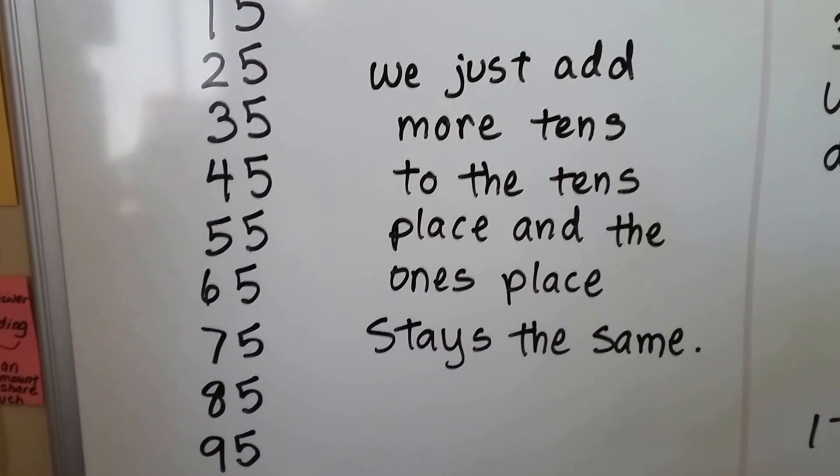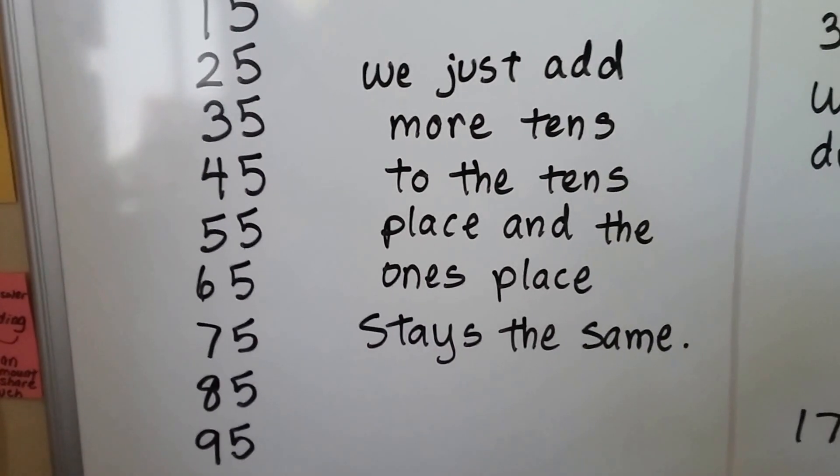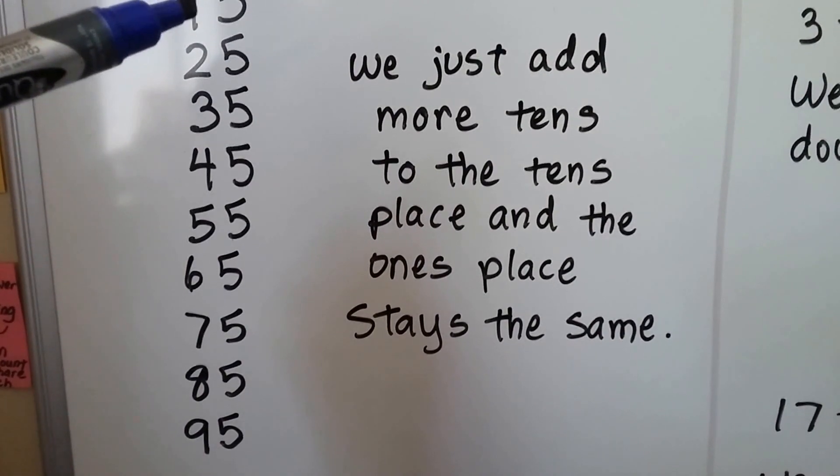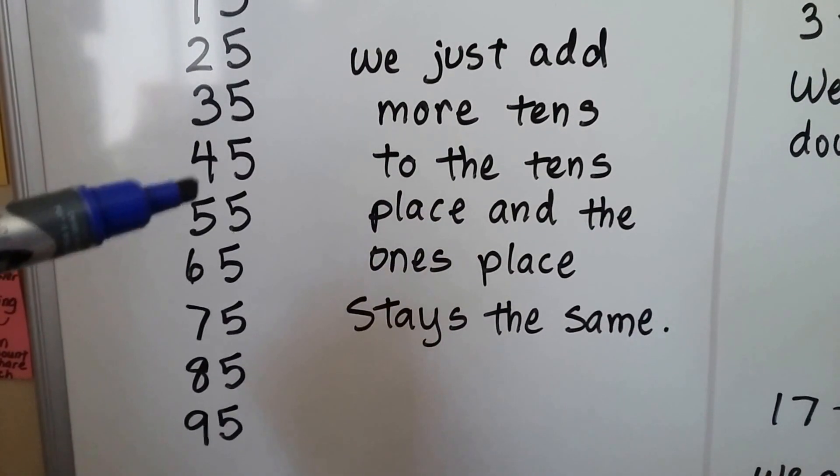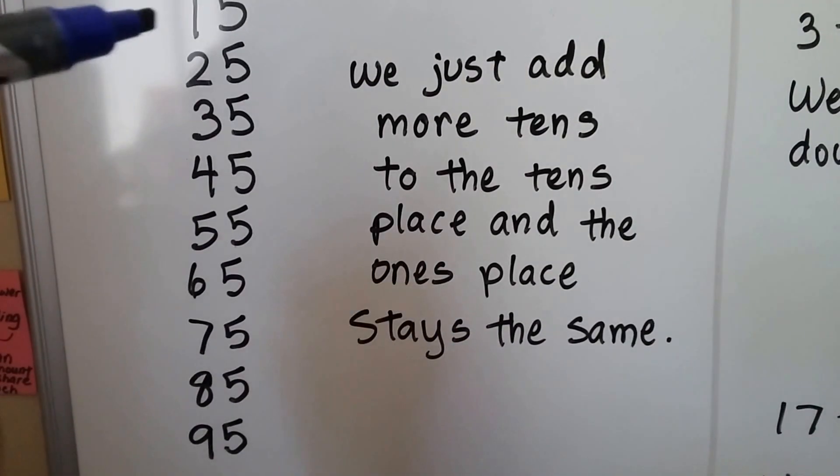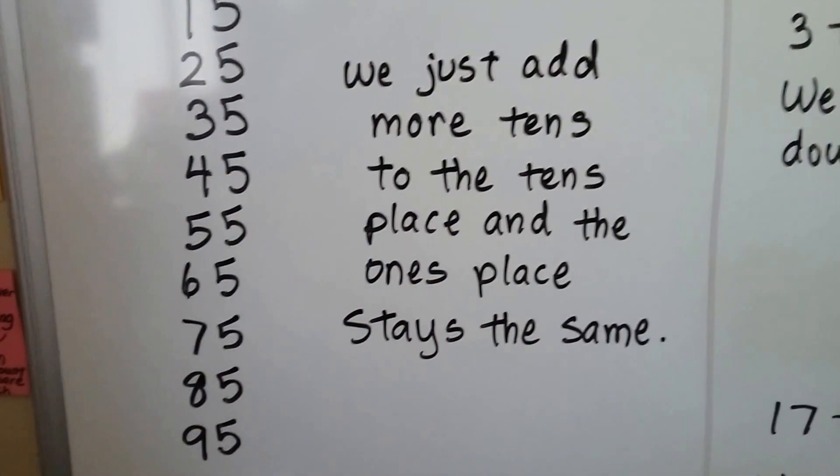So we don't have to count 10, 20, 30, 40 like that. We could, but if we're starting with 15, we just keep adding more to the tens place and the ones place is staying the same. We can skip count by tens starting with 15 or any number.